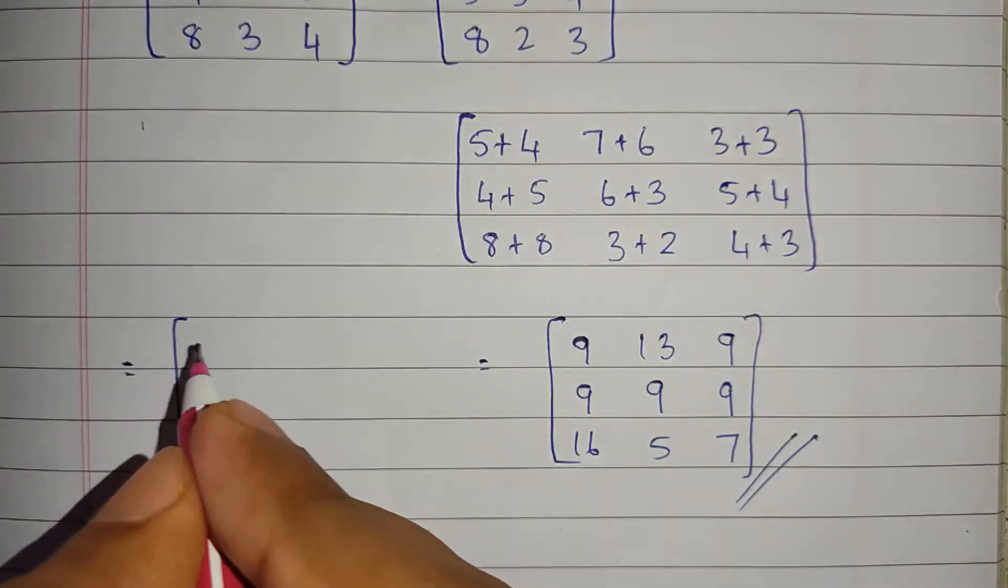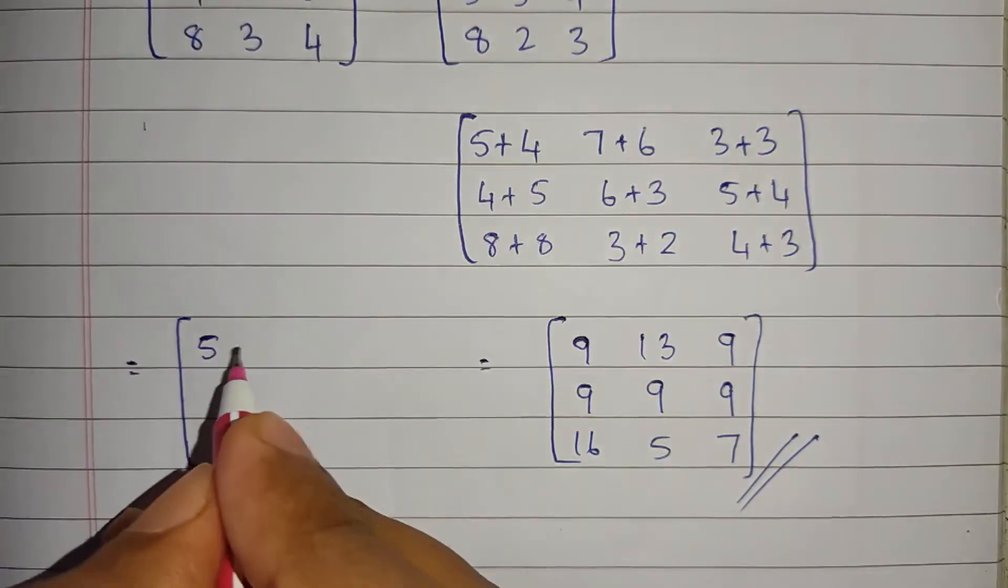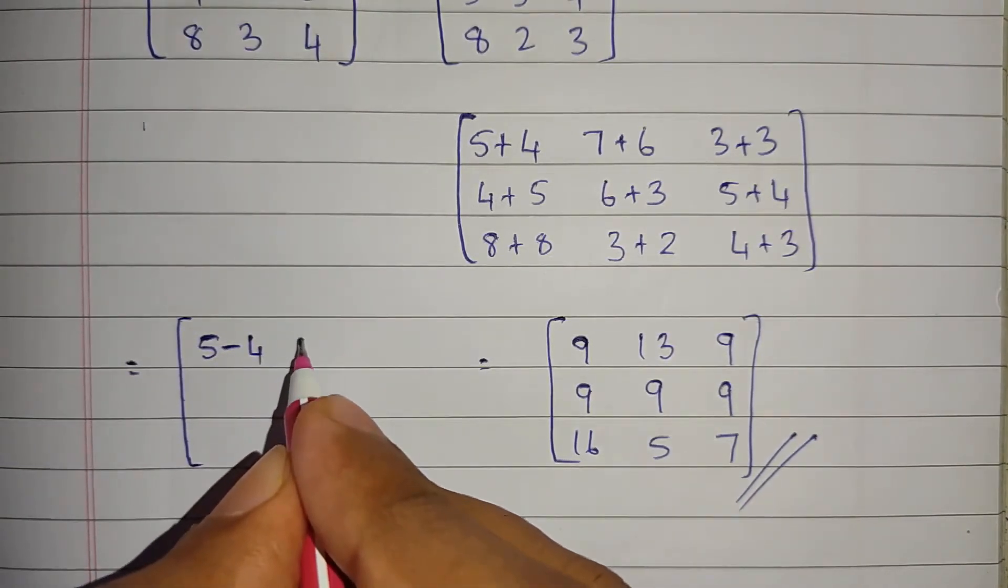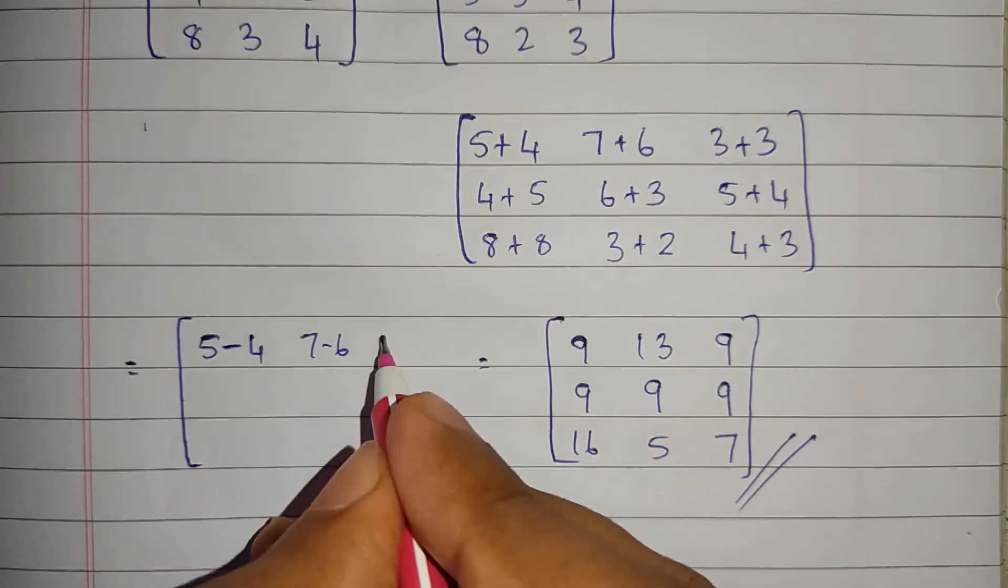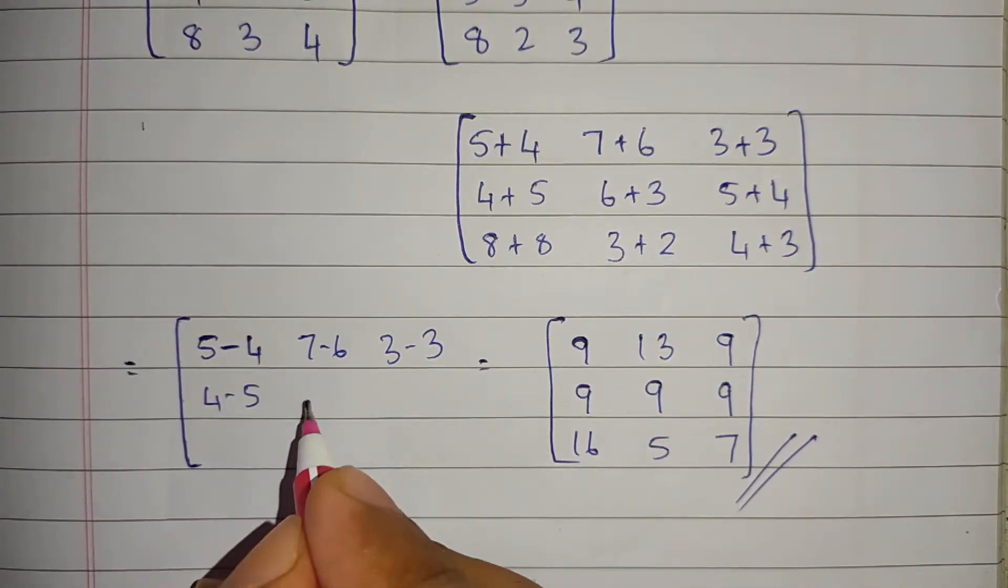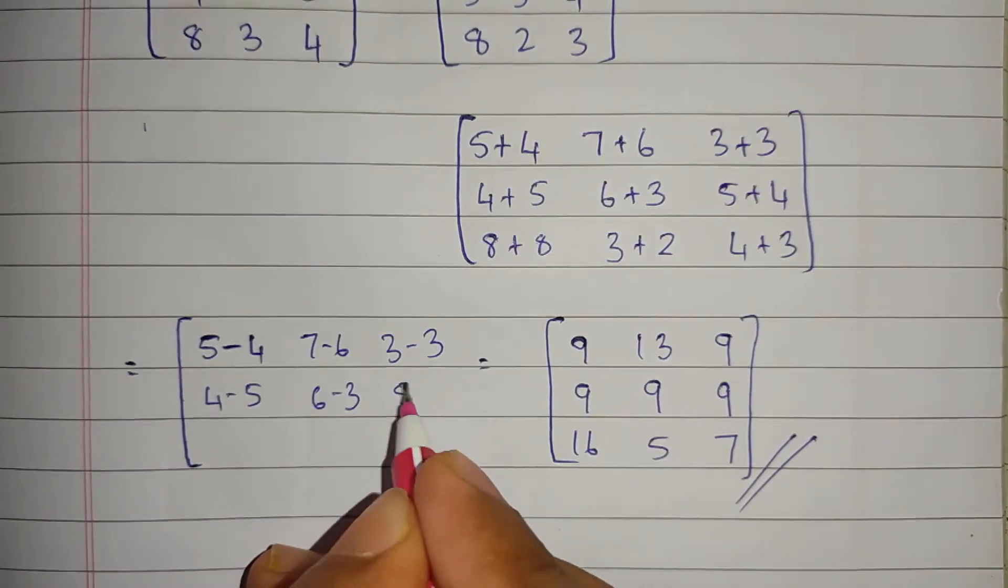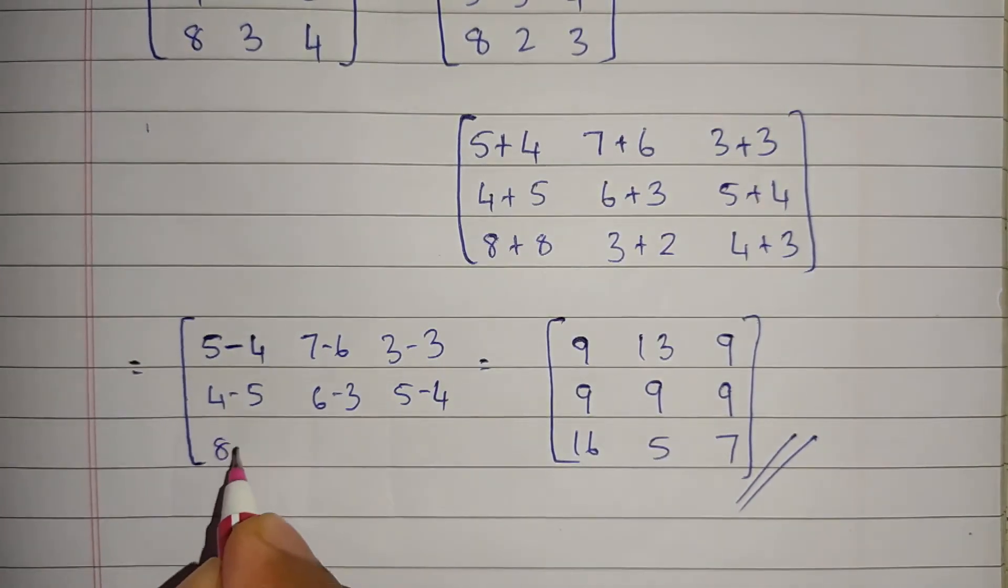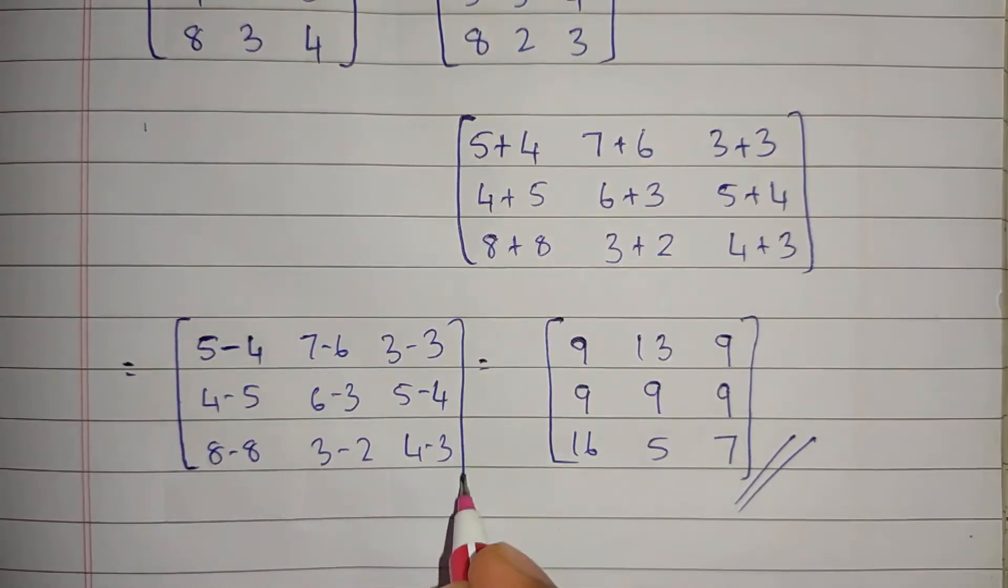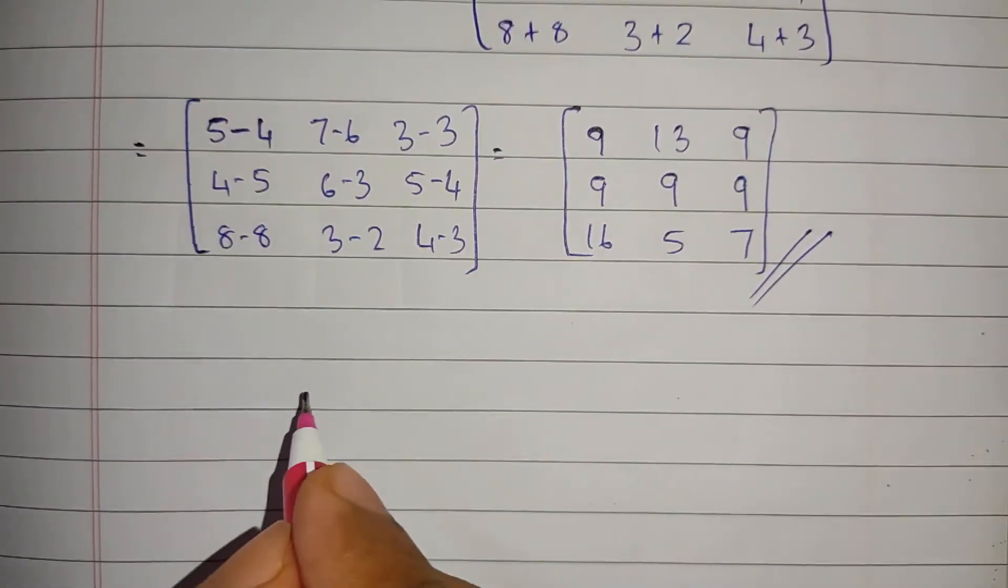Put the minus sign. 5 minus 4, 7 minus 6, 3 minus 3, 4 minus 5, 6 minus 3, 5 minus 4, 8 minus 8, 3 minus 2, 4 minus 3. So we'll get our answer as: